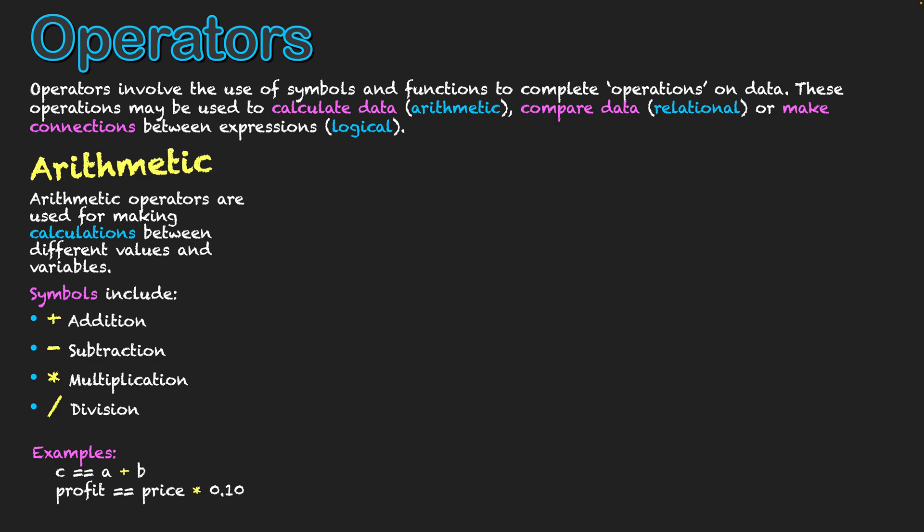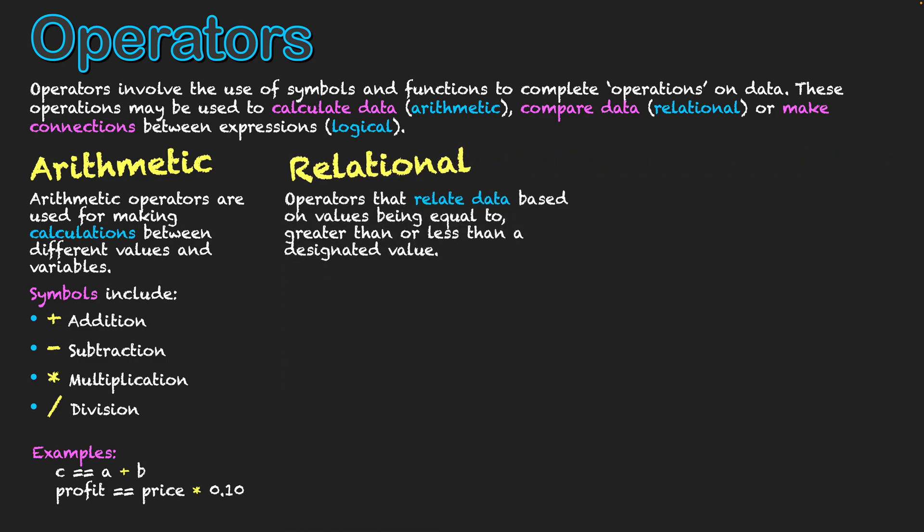The next area we're going to talk about is relational operators. These are operators that relate data based on values being equal to, greater than, or less than a designated value. So here we're talking about our symbols, and one of them we've seen already is the equal to symbol. And that wasn't a typo down there when you looked at the example from the previous one. It is two equal symbols usually placed next to each other in programming.